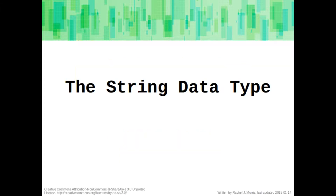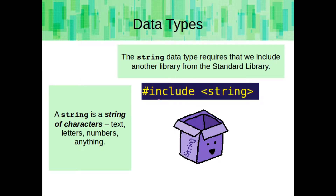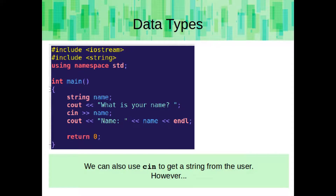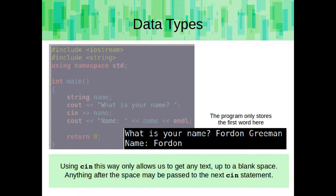Now that we've covered input and output, let's talk a little more about the string data type. The string data type requires that we include another library from the standard library, so we'll include the string library. A string is a string of characters — text, letters, numbers, anything. We can also use cin to get a string from the user, but using cin this way only allows us to get text up to a blank space. Anything after the space may be passed to the next cin statement if you have one.